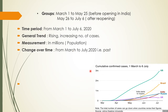The time period given is on the X-axis, from March 1 to July 6, 2020. The general trend is a rising and increasing number of cases. The measurement given is in millions, since this is population data. Change over time — from March to July 2020 — is in the past, as we are now in August, so we will be using past tense.